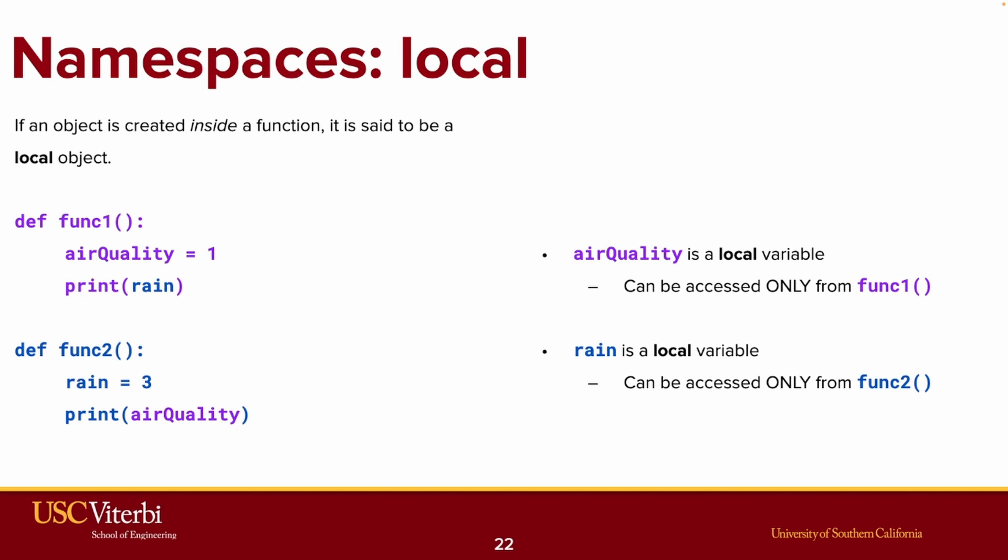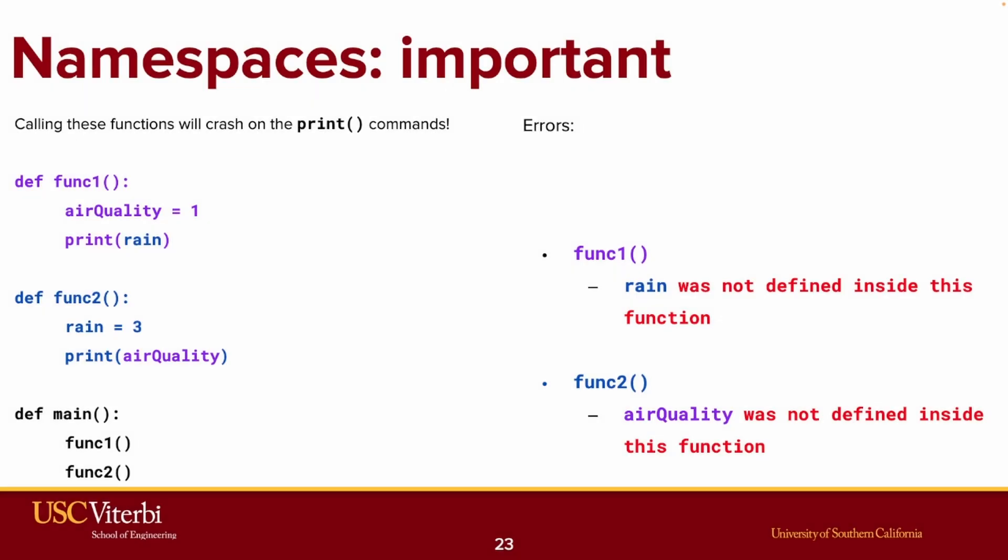Which actually means that if we try running this code, you can see that rain is trying to be accessed in func1 and air quality is trying to be accessed in func2. But because their namespaces are respectively for rain func2 and air quality func1, your code's going to crash. Rain was not defined inside of func1. It's outside of that namespace. The program can't see it. Your code crashes.